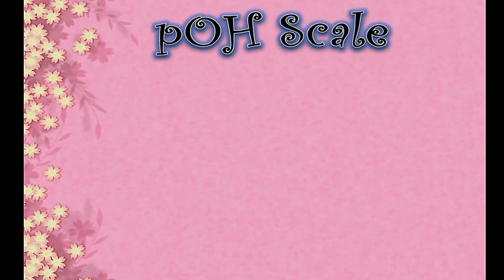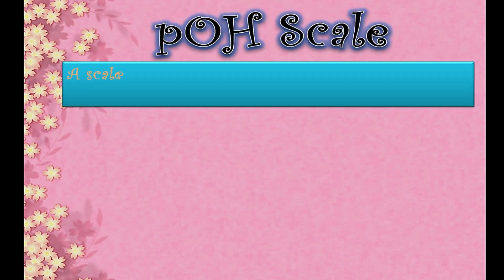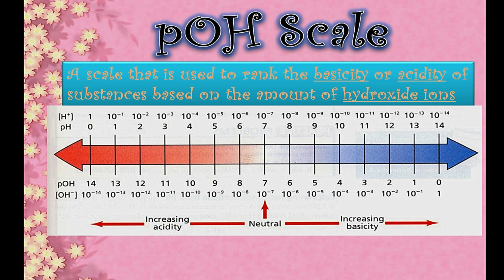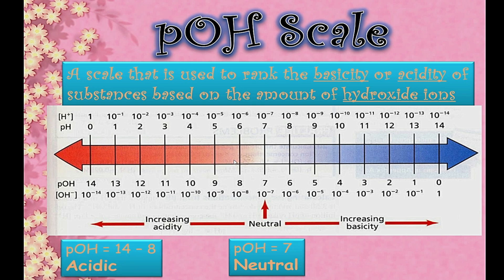Now let me explain the pOH scale. It is a scale used to rank the basicity as well as the acidity of any substance based on hydroxide ion concentration. The pOH scale runs from 14 down to 0 in descending order, while the pH scale runs from 0 to 14. The neutral point is 7 on both scales. Moving from 7 toward 14 on the pOH scale increases acidity; moving from 7 toward 0 increases basicity.